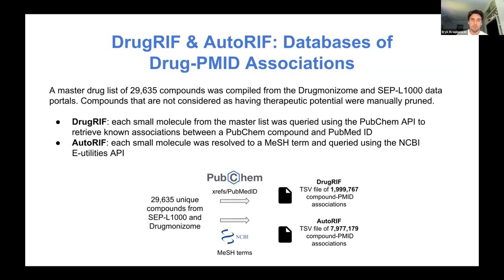DrugRIF was created by querying this master list using the PubChem API, which has an endpoint for cross-references between PubChem compounds and PubMed IDs. For AutoRIF, we resolved each compound to a MeSH term — a Medical Subject Heading term — and then queried these MeSH terms using the PubMed API to find PubMed IDs of abstracts containing those terms. DrugRIF can be thought of as a more curated resource where provenance can be traced back to PubChem, whereas AutoRIF is more complete but may be more prone to errors due to fuzzier string matching.